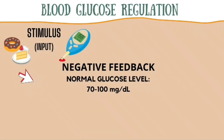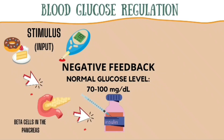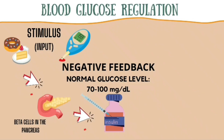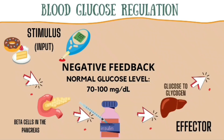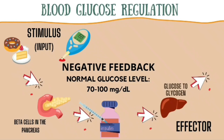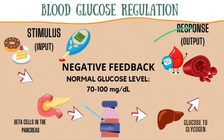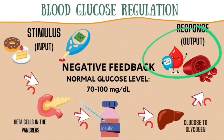Another example of a negative feedback mechanism is blood glucose regulation. The blood glucose level is from 70 to 100 mg per dL. When the blood sugar rises, it is detected by the receptors in your pancreas. The pancreas releases insulin, which instructs body cells such as muscle cells, fat cells, and liver cells to take up the excess glucose until the sugar level decreases to the normal range. When the blood sugar reaches homeostasis, the pancreas stops releasing insulin.